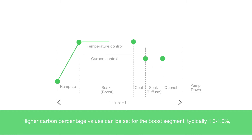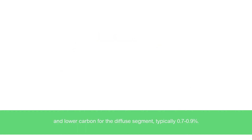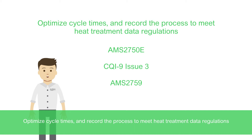Higher carbon percentage values can be set for the boost segment, typically 1.0 to 1.2 percent, and lower carbon for the diffuse segment, typically 0.7 to 0.9 percent. Optimize cycle times and record the process to meet heat treatment data regulations.